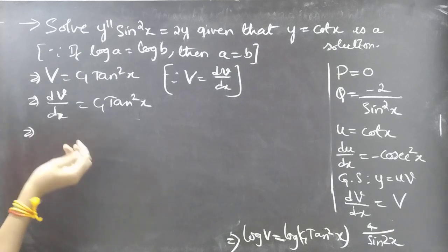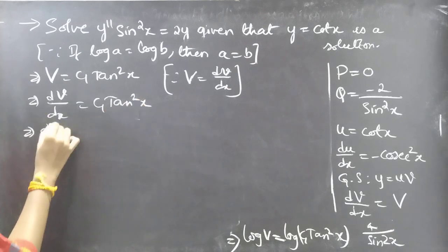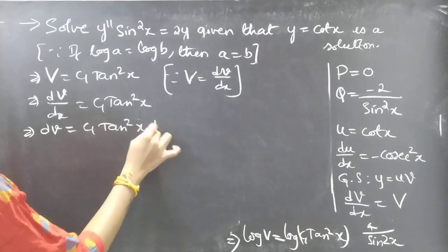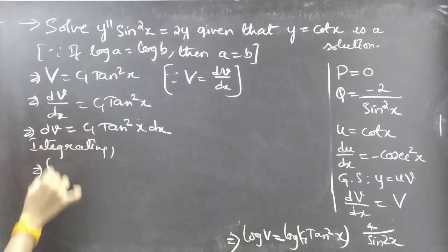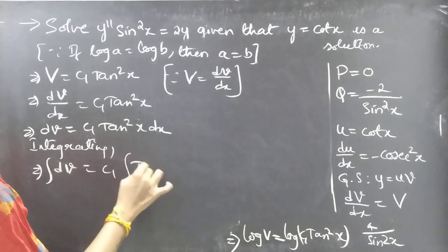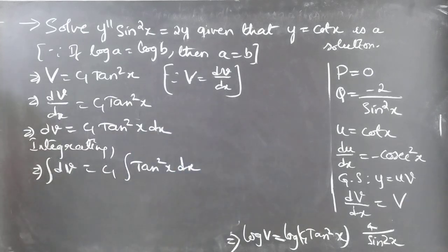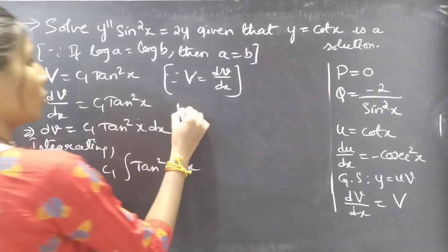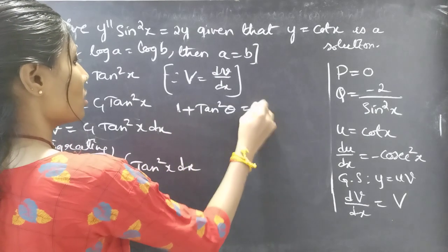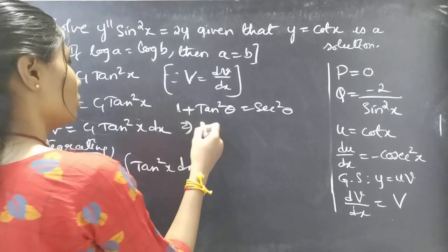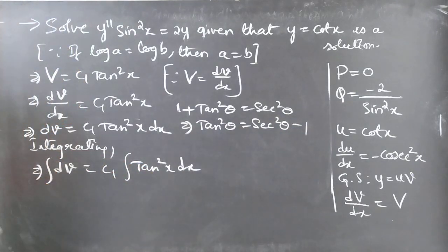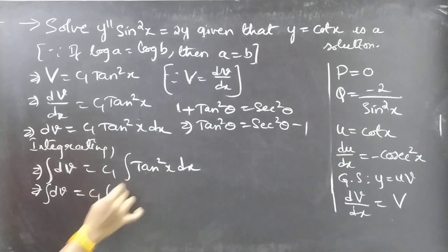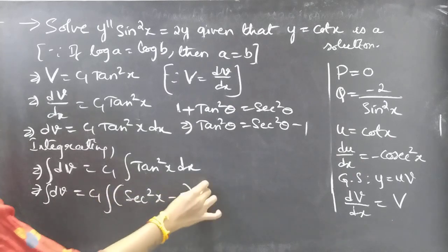Now we can separate variables: dv = C₁ tan²x · dx. Integrating both sides: ∫dv = C₁∫tan²x dx. Using the identity 1 + tan²θ = sec²θ, we get tan²θ = sec²θ − 1, so we replace tan²x with sec²x − 1.